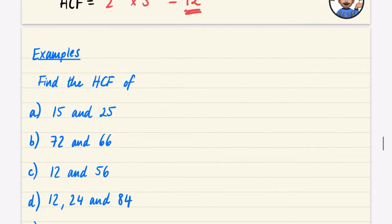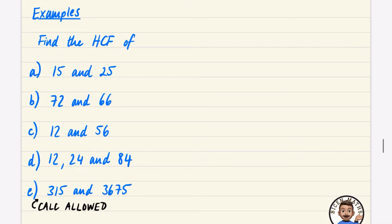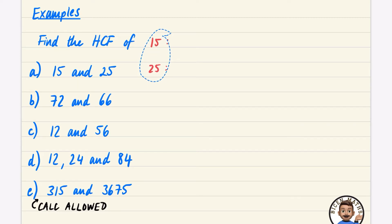We're going to do this first one — we're going to have a look at 15 and 25. For 15 it's going to be pretty easy to list the factors. We have 1 × 15 and 3 × 5.